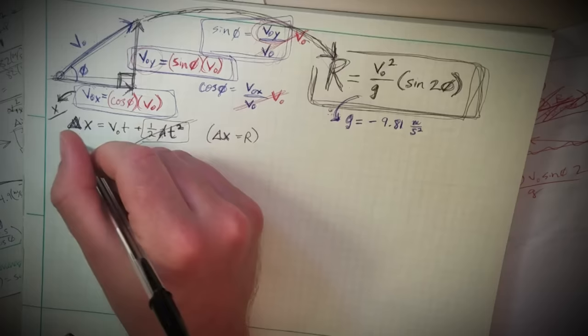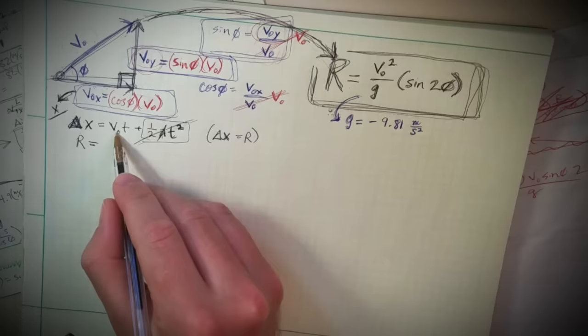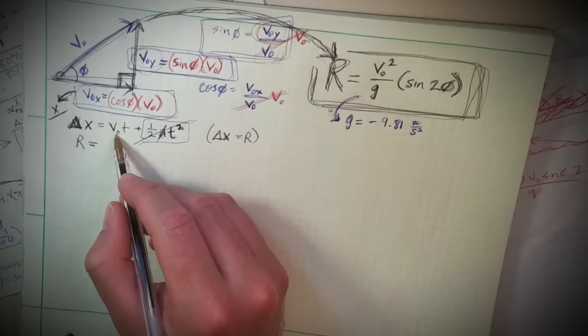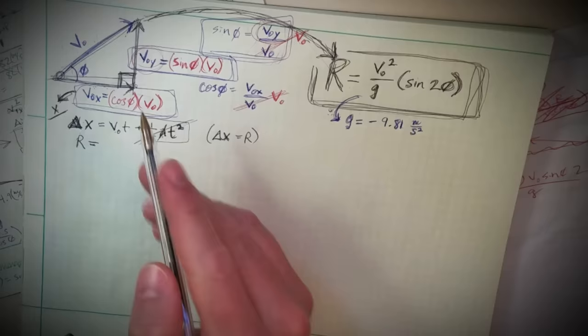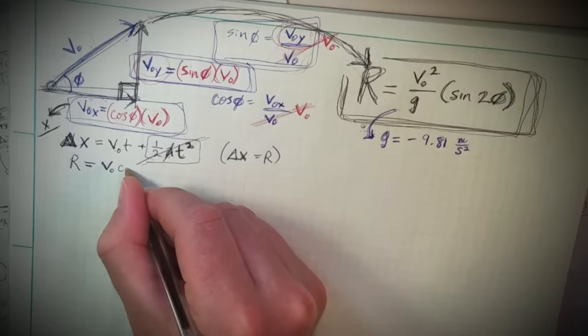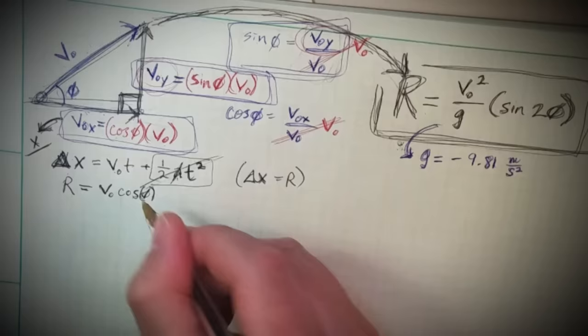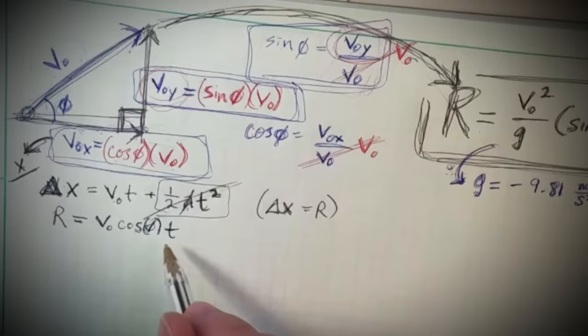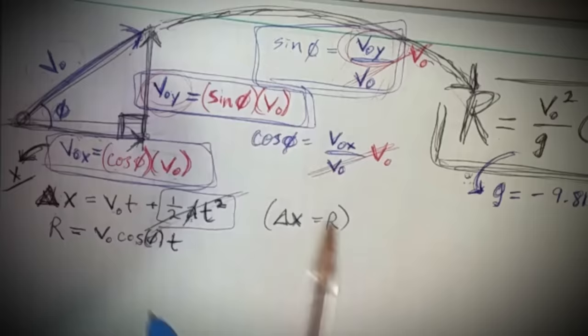So delta x equals R. We'll say R equals the velocity in the x-direction times time. The velocity in the x-direction we know is cosine of the actual velocity, so: R = v₀ × cosine(θ) × t.